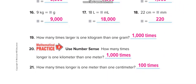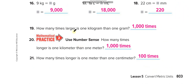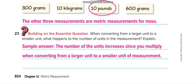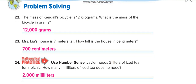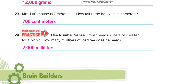Remaining conversions include centimeters to millimeters and grams to kilograms. How many times larger is one kilogram than one gram? One thousand times, because one kilogram equals one thousand grams. How many times longer is one kilometer than one meter? One thousand times. How many times longer is one meter than one centimeter? One hundred times, because one meter equals one hundred centimeters. On the next page: twelve kilograms equals twelve thousand grams; seven meters equals seven hundred centimeters; two liters equals two thousand milliliters.